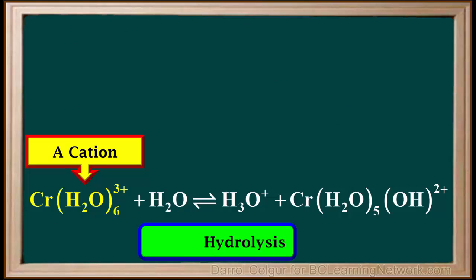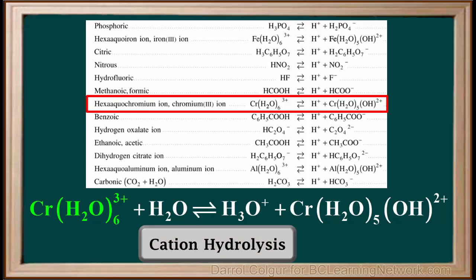Because the hexaquochromium ion is a cation, this is an example of cation hydrolysis. The species in this equation can be found on the acid table, here. Here is Cr(H2O)6 3+. H+ is short for H3O+. And the conjugate base of hexaquochromium is here, Cr(H2O)5(OH) 2+.